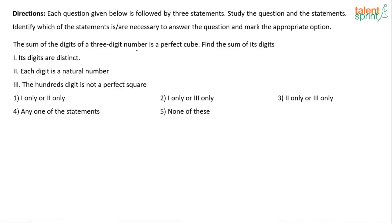The sum of the digits of a three-digit number is a perfect cube. Find the sum of its digits. There are three statements. Let me see how many of you get the answer to this one. Enough time has been given. I knew this would need some time and there will be a lot of confusion among you guys. Let's look at the solution.